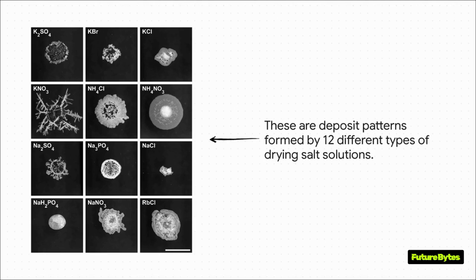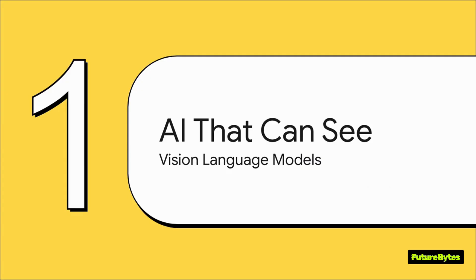So what are they? They're salt crystals. When tiny drops of 12 different salt solutions dry up, they form these totally unique characteristic patterns. Identifying them is the perfect example of a really hard visual analysis problem, and it highlights a huge challenge in AI. To really get our heads around how an AI even begins to tackle a problem like this, we need to talk about the tech that gives it sight in the first place.